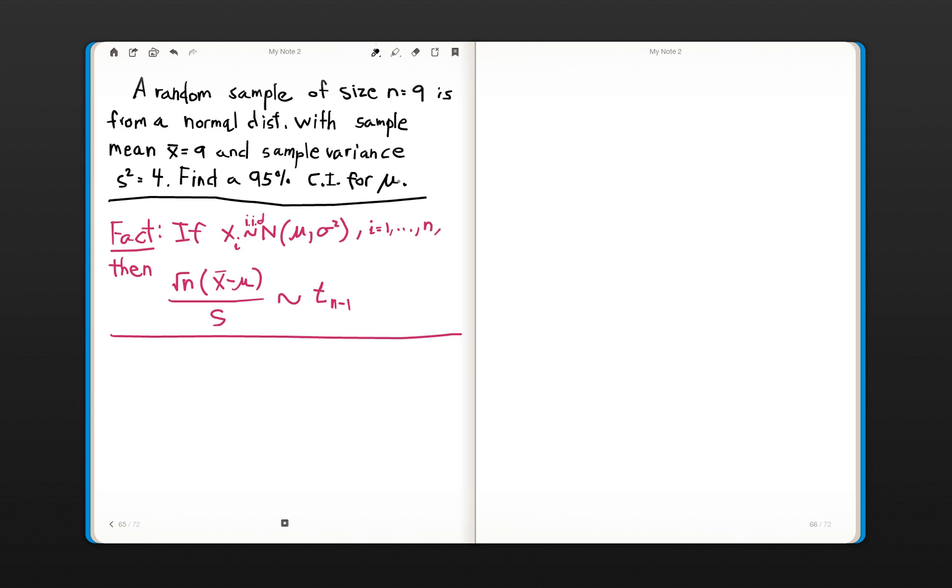One thing you have to recognize right off the bat when solving confidence interval problems is look at the sample size. Anything under 30 is considered in statistics, rule of thumb, to be a small sample size. And so when you're forming a confidence interval, that has to be taken into account.